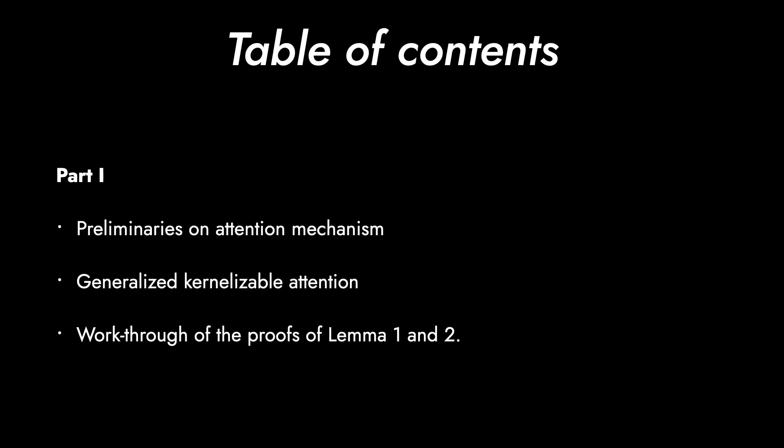This Part 1 handles the preliminary on attention mechanism, key notations, and the generalization for kernelizable attention. Finally, the walkthrough of the proofs of Lemma 1 and 2, which state about positive random features using hyperbolic cosine and the variational analysis on the comparative approximation methods with a charming result.